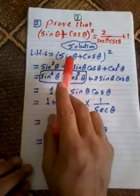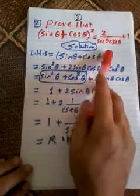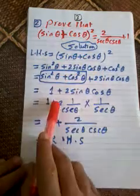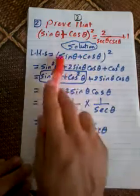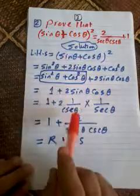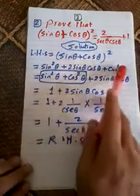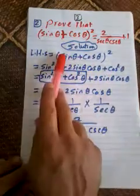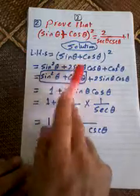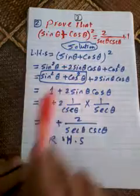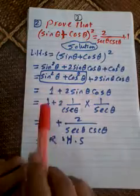Left hand side: sine theta plus cosine theta, all to the power 2. Expand the bracket: first term squared plus second term squared plus two times the first times the second, giving sine squared theta plus cosine squared theta plus two sine theta cosine theta.